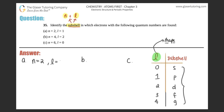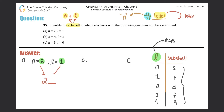When you classify a subshell, you'll always have a number and then a letter. The number is always represented by n, and the letter is always represented by the l information. So for part (a), n = 2 and l = 1. This gives us a two blank — l of one is p — so the subshell is specifically a 2p subshell.